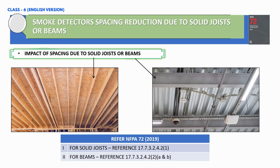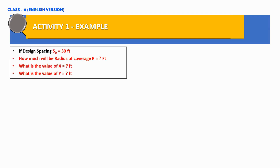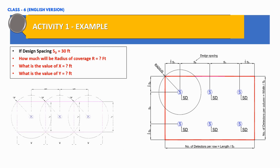We shall discuss this further in the next session. Before we wrap up, I want to leave you with a little challenge. Imagine you are designing smoke detectors for a particular living room. Based on what we have learned in today's class, can you determine the radius of coverage for one smoke detector and also the x and y distances for this example? Drop your answers in the comment section — let's see who can come up with the most accurate solution.